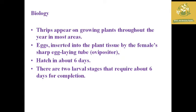Thrips are found throughout the year. The eggs are inserted inside plant tissue due to a special character of the female — a sharp egg-laying tube called the ovipositor, which is needle-like, allowing them to pierce plant tissue and lay eggs inside. Eggs hatch in around six days and there are two larval stages, each requiring six days for completion.